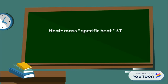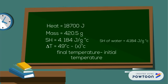For this equation, we are using heat equals mass times specific heat times delta T. We know that heat is equal to 18,700 joules. Our mass is 420.5 grams,